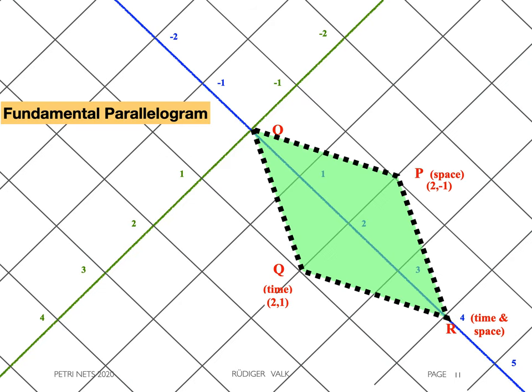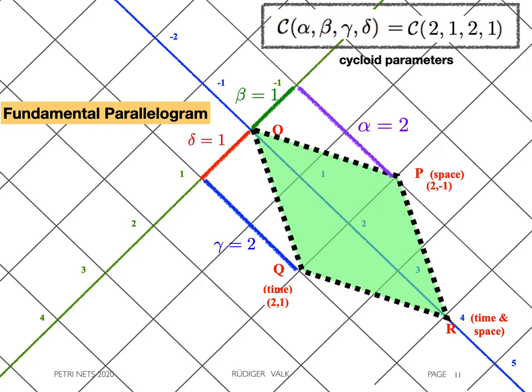In the fundamental parallelogram, we see the vertices O, P, Q, and R, and the parameters alpha and beta, which equal 2 and 1, as well as gamma and delta. Altogether, we have the cycloid 2, 1, 2, 1.